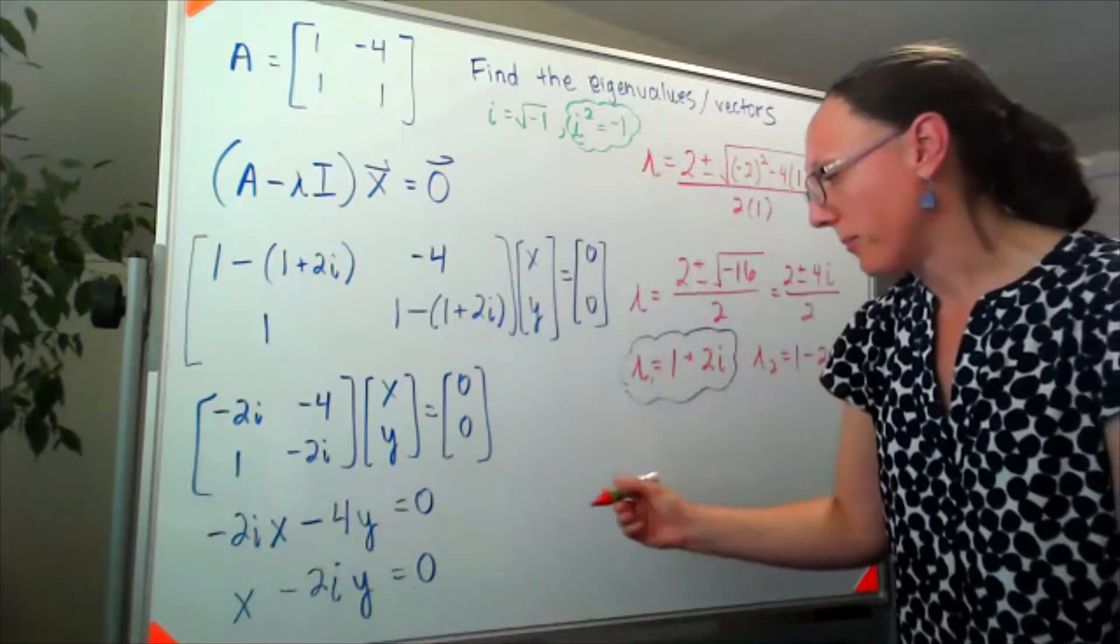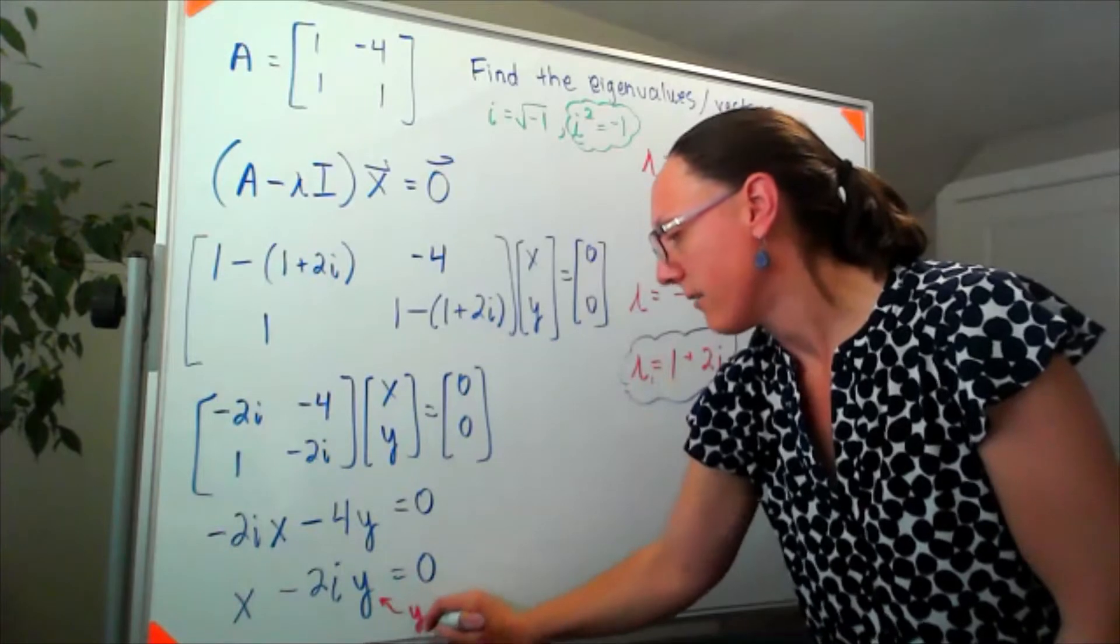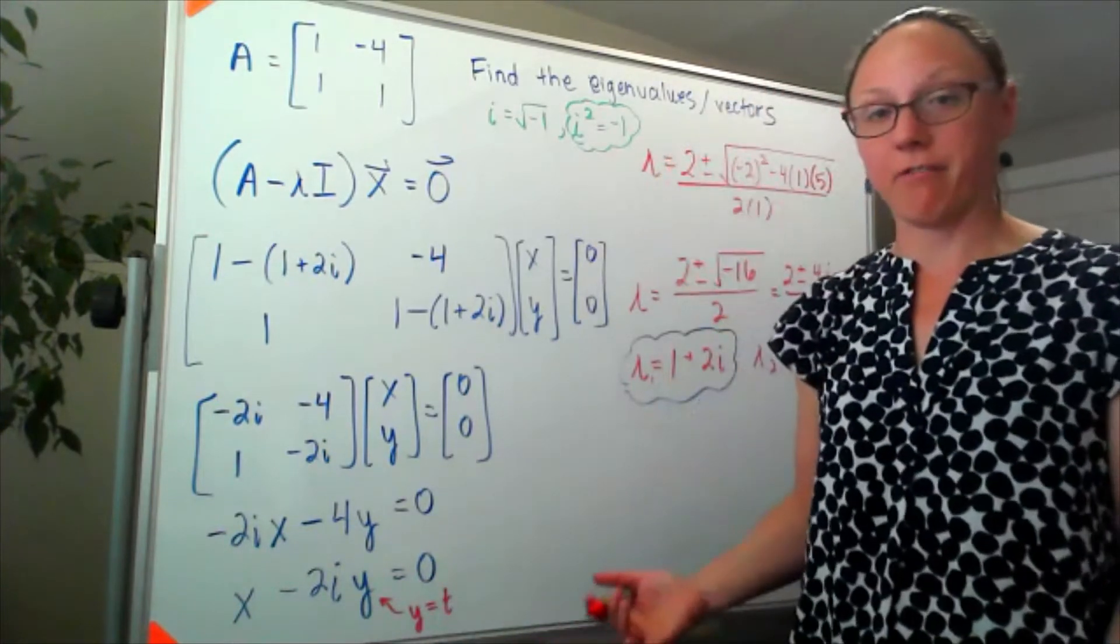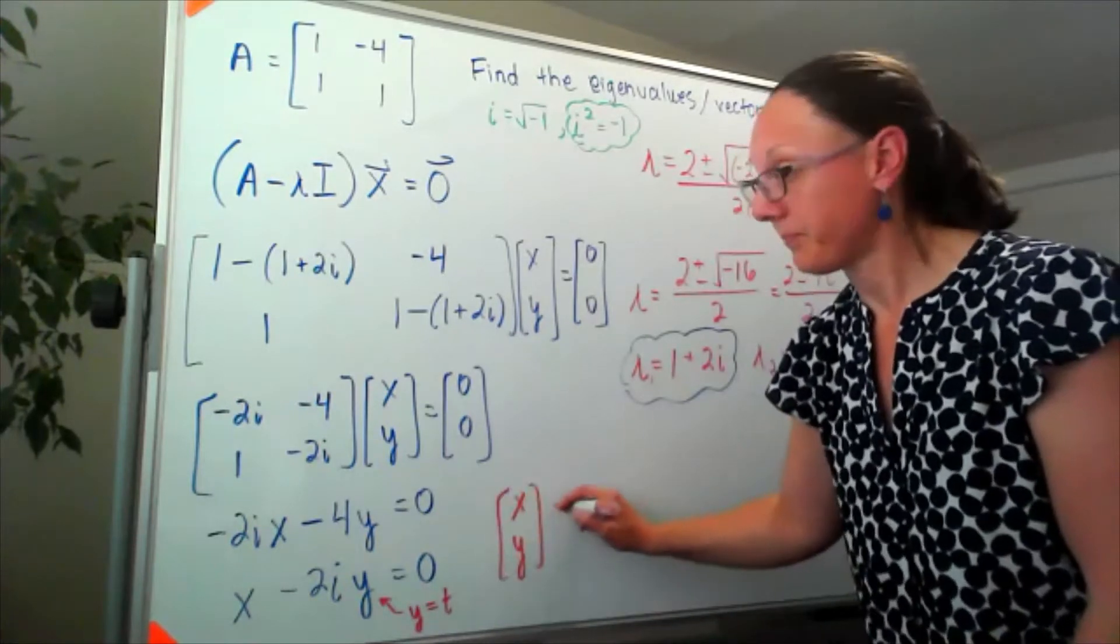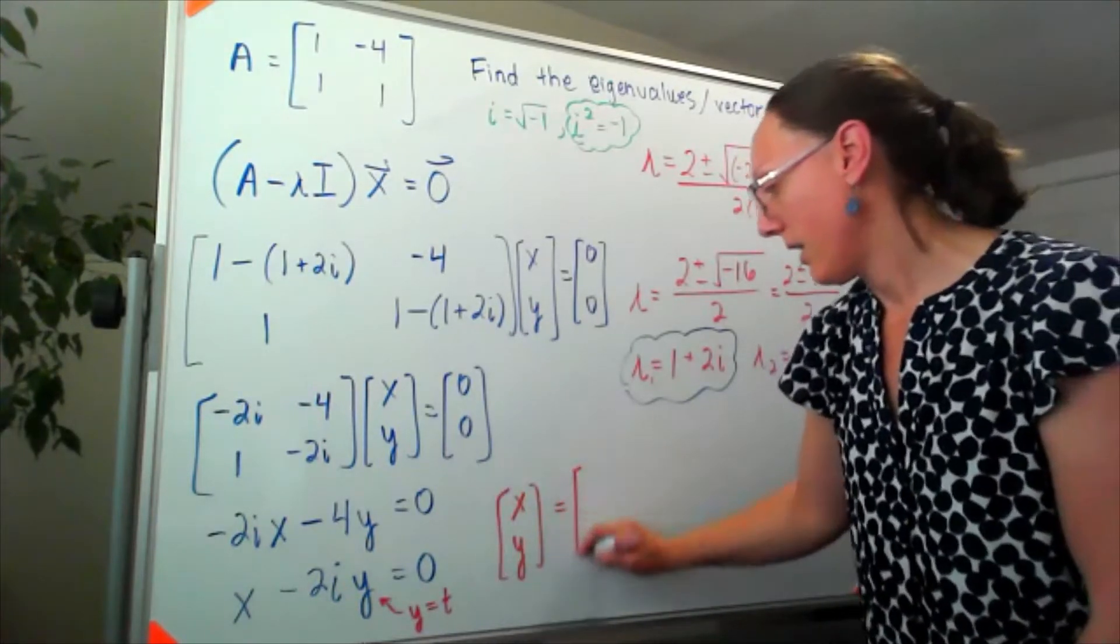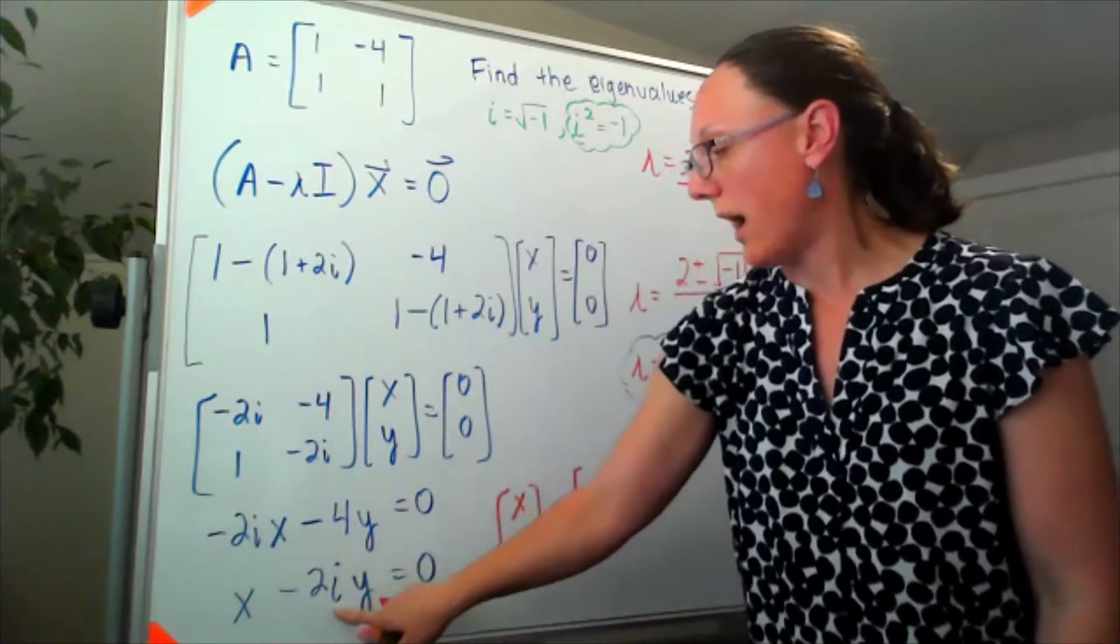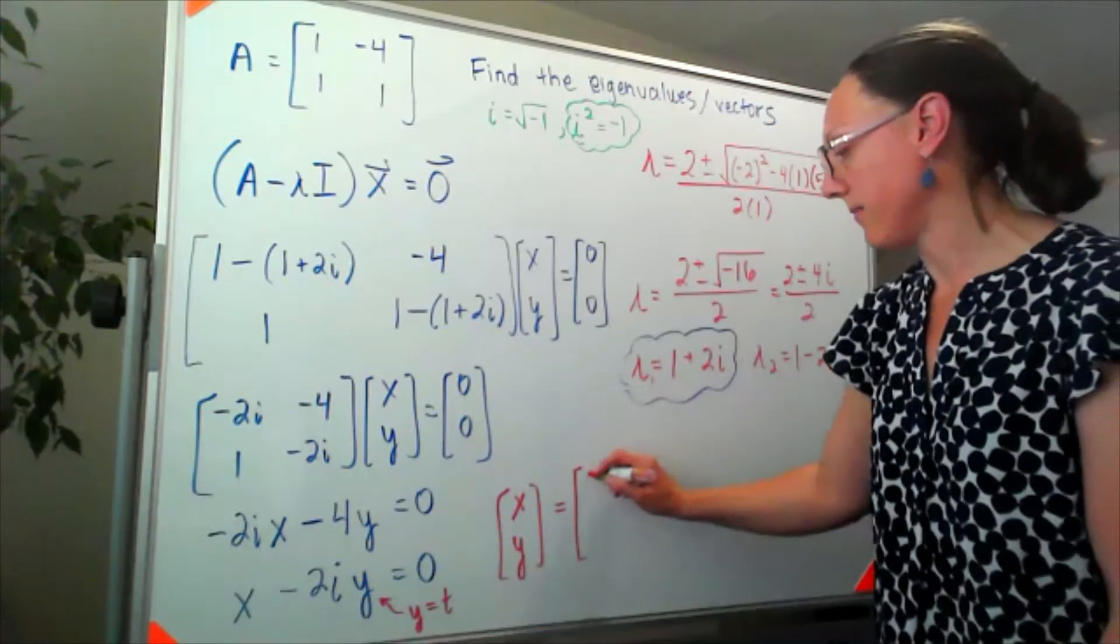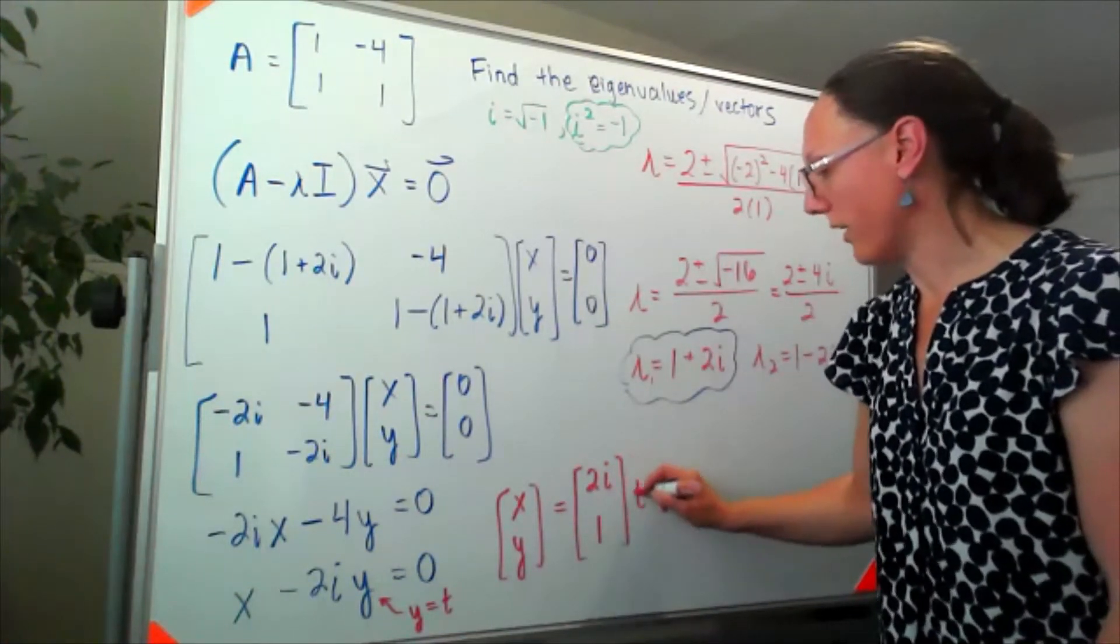So on the bottom row, if I set y equal to t, or my free variable, then I can write my vector x y as, well that means x would equal 2i times t and y would just be equal to 1t.